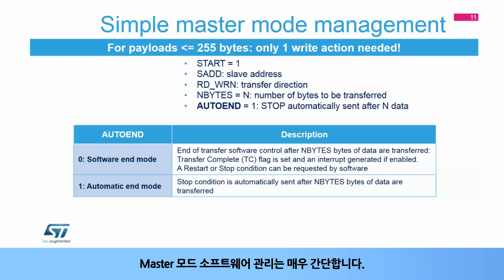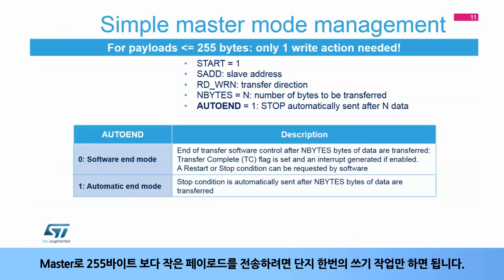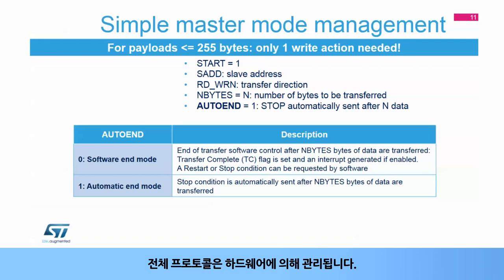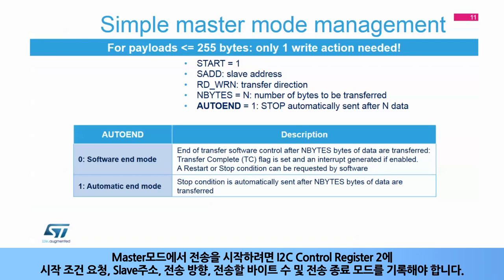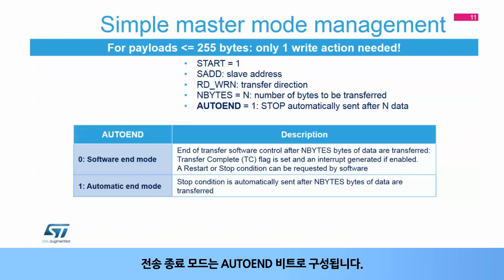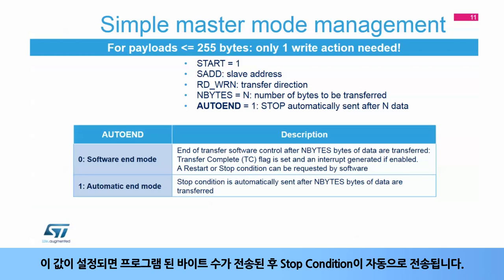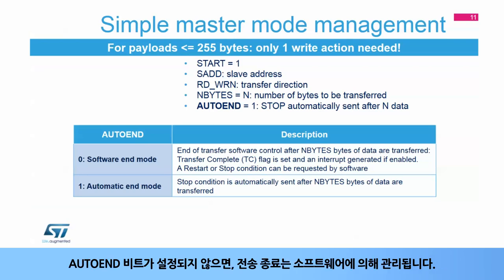Master mode software management is very simple. Only one write action is needed to handle a master transfer with a payload smaller than 255 bytes. The full protocol is managed by the hardware. In order to start a transfer in master mode, I2C control register 2 must be written with the start condition request, the slave address, the transfer direction, the number of bytes to be transferred, and the end of transfer mode. End of transfer mode is configured by the auto end bit. If it is set, the stop condition is automatically sent after the programmed number of bytes is transferred. If the auto end bit is not set, the end of transfer is managed by software.